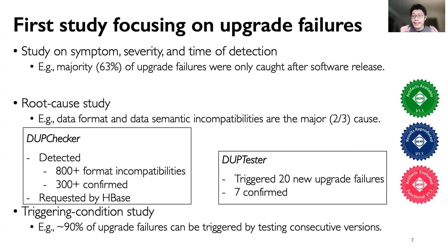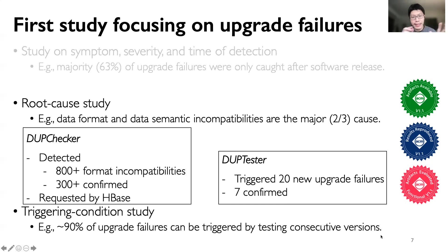We open-sourced the dataset used in our study, and both of our tools can be found in our paper. In the remaining part of this talk, I'm going to skip the symptom severity study, because it mainly confirms that upgrade failures have severe consequences. I'm going to introduce some interesting findings in our root cause study and triggering condition study that led to the design of our tools.